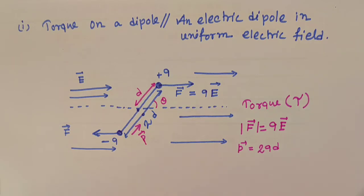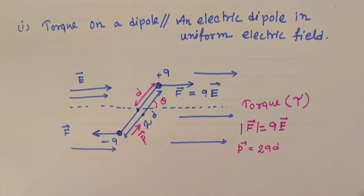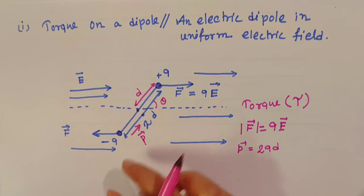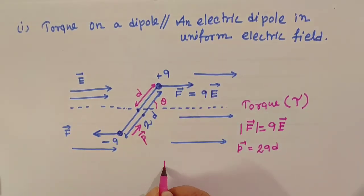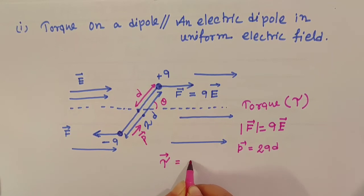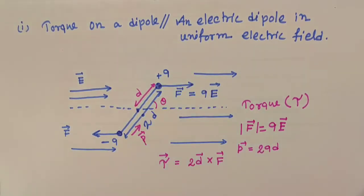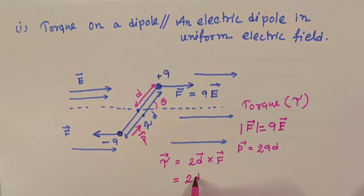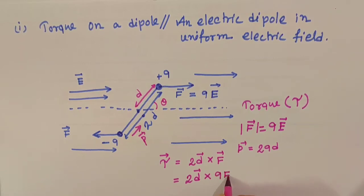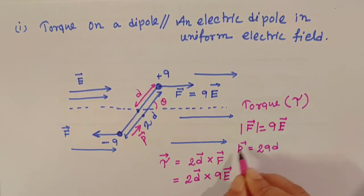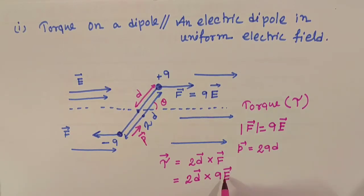In such a situation, torque experienced by this dipole: we can write torque tau is equals to 2D into F - that means the value of force multiplied by the distance between the two charges, 2D into F. Simplifying this equation, the value of F is equals to Q into E. So putting the value of F as QE, and the value of P is equals to 2QD, so we can write 2QD. In replacement of 2QD we can write P, because dipole moment P is equals to 2QD.